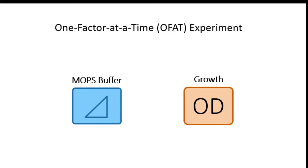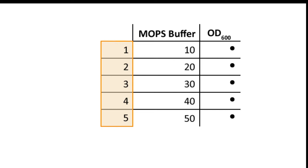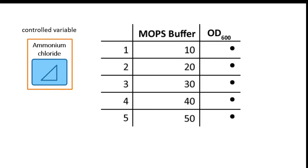Coming back to the previous example, suppose Anna wants to find the concentration of MOPS buffer that results in the highest growth. This concentration ranges from 10 to 50 millimolars. Anna designed an experiment with five trials. For each trial, she increases the amount of MOPS buffer by 10 millimolars. To control for ammonium chloride, Anna conducts the trials with an ammonium chloride concentration fixed at 20 millimolars. After each trial, she measures the optical density after 24 hours as a measure of bacterial growth.